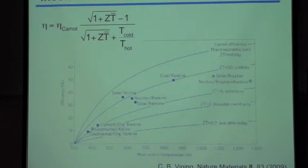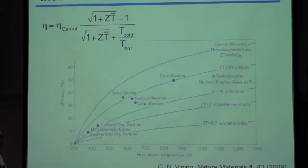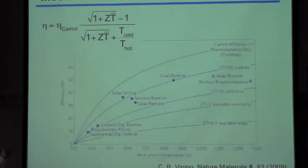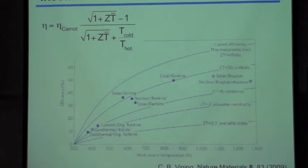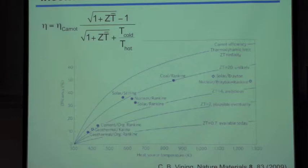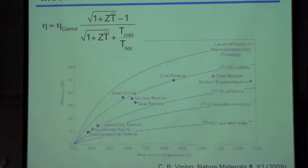You can plot this assuming the cold end is at room temperature — 300 Kelvin — with the heat source temperature on the x-axis and efficiency on the y-axis. The top line is the Carnot efficiency, the thermodynamic limit. There are typical values: T-bar is the mean temperature between hot and cold. To actually reach the Carnot efficiency, the product of ZT — where this pre-factor has units of one over temperature — would have to be infinity.